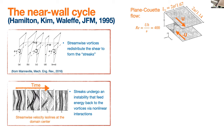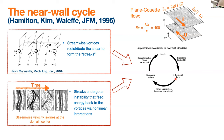Hamilton, Kim, and Waleffe found that those streaks are unstable: when streaks are stacked together they develop a sinusoidal instability. Looking at velocity isolines at the center of the domain — with only one fast and one slow streak — they exhibit this sinusoidal oscillation and return to their initial state. Analysis of the Navier-Stokes triad equations shows this sinusoidal instability feeds energy back to the streamwise vortices through nonlinear interactions, closing the loop: vortices generate streaks, streak instability regenerates vortices.